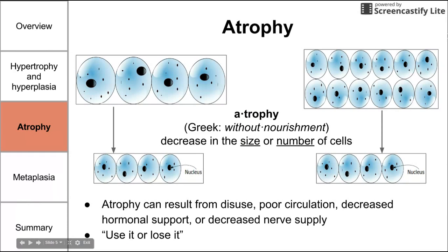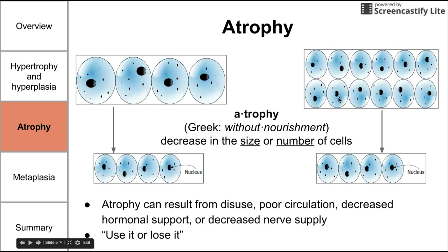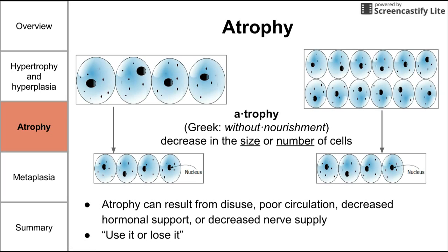Next, we have two mechanisms in which tissues can waste away or shrink, and they are both called atrophy. Atrophy can refer to either a decrease in size or a decrease in number of cells. The roots of the word atrophy come from Greek, and it literally means without nourishment. A lack of nourishment is essentially what causes atrophy. This lack of nourishment can be a result of disuse, poor circulation, decreased hormonal support, or decreased nerve supply.